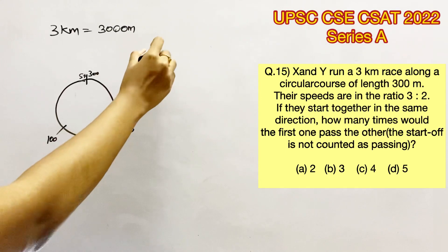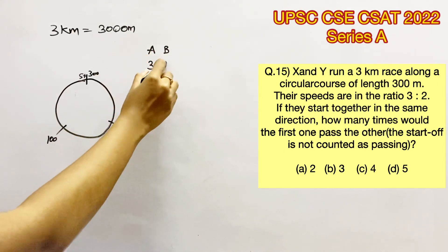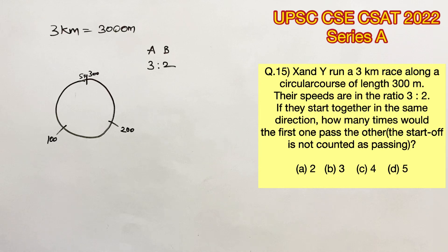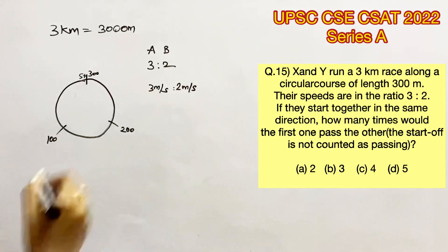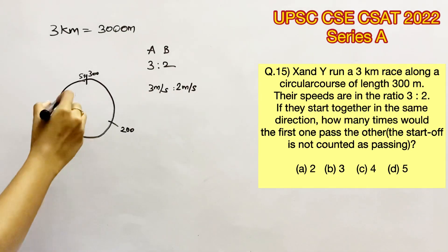Now they say the speeds are in the ratio 3 is to 2. Let's say A is the faster one, B is the slower one. And let us consider A's speed is 3 meters per second, B's speed is 2 meters per second. And I'm going to mark the positions of A and B for every 100 seconds.